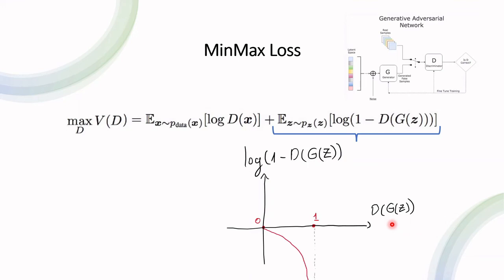And we can see again that the maximum value over here is when this is equal to zero. So regarding the discriminator, we want to maximize these two terms.